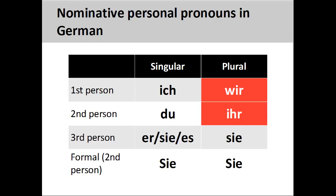Another group of actors appears on the stage, which we would collectively address as ihr, y'all. Again, this is the informal form of address and should only be used with groups of close friends, relatives, young children, and pets.